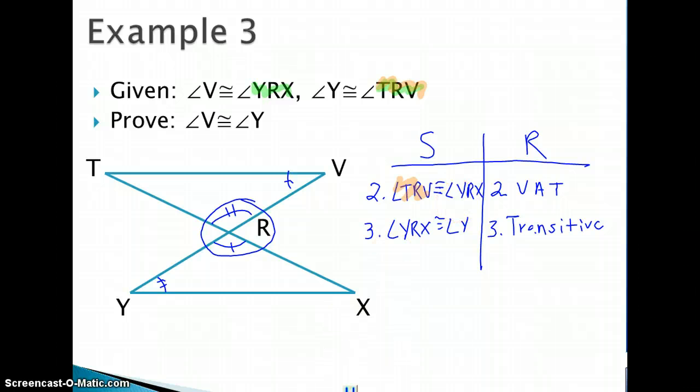Now from there, because I have mentioned angle YRX twice, I can lump those together. So that'll give me that common piece - YRX is the same in both. And I'm going to say that angle V is congruent to angle Y. And that's because of the transitive property again.